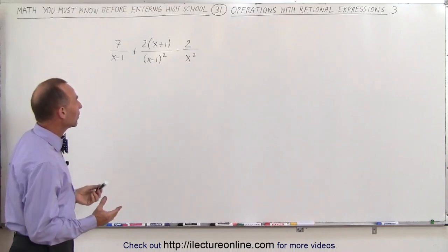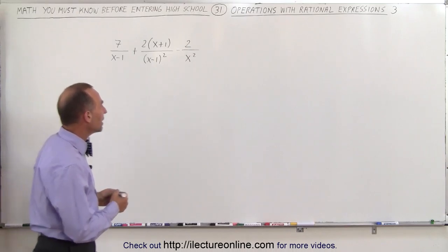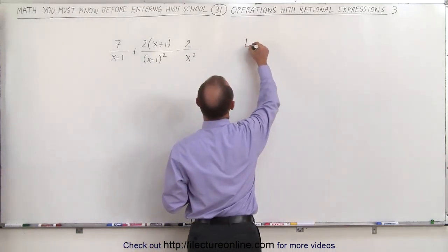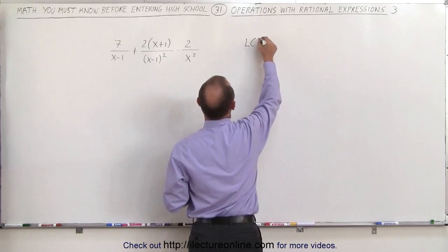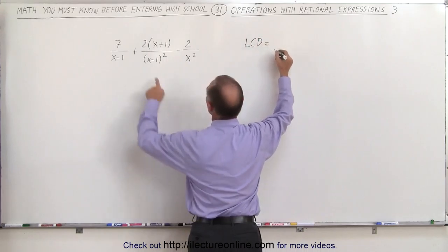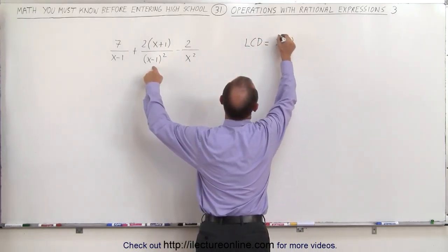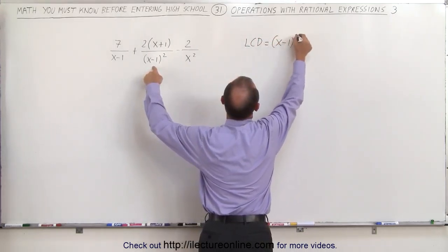The lowest common denominator in this case is x minus 1 squared times x squared. So that's our lowest common denominator.